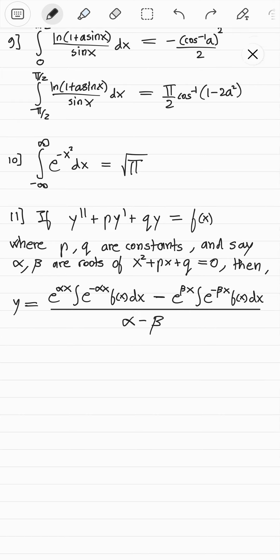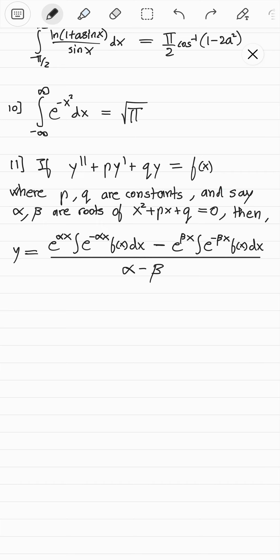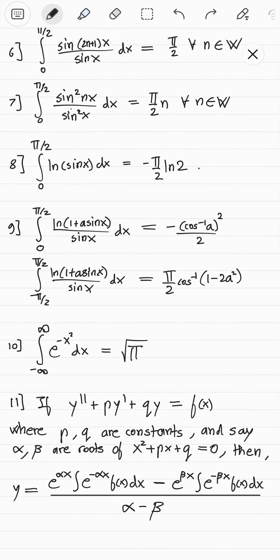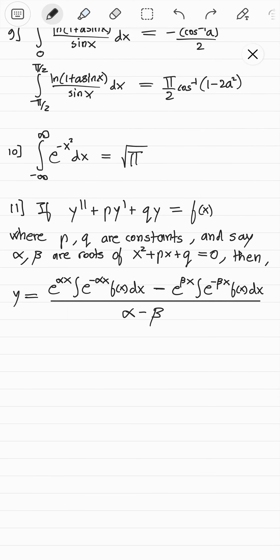The eleventh result is a formula for when you have a differential equation. I made a video on this — you can watch it to learn how it's derived, why it works, and its applications. For example, you could analyze simple harmonic motion using this formula with a bit of complex numbers, or analyze LCR circuits. So I think that's good. We are done with these eleven results — I'll see you guys in the next video.